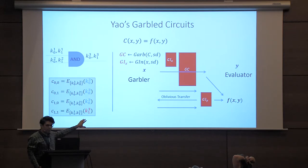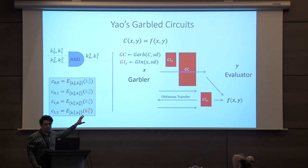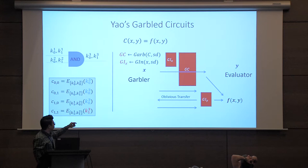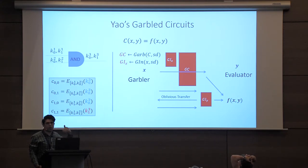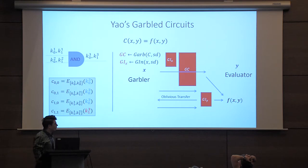The evaluator learns its own garbled inputs using oblivious transfer, and then evaluates the garbled circuit on the garbled inputs to learn the output. This is semi-honest secure and is already a two-message secure two-party computation. In the oblivious transfer, the evaluator sends the first OT message, and the garbler responds with the second message along with the garbled circuit and garbled inputs.